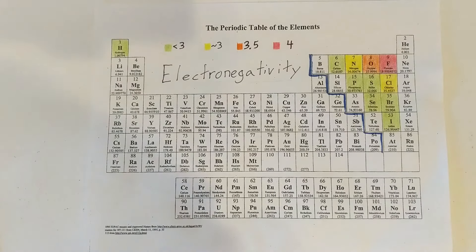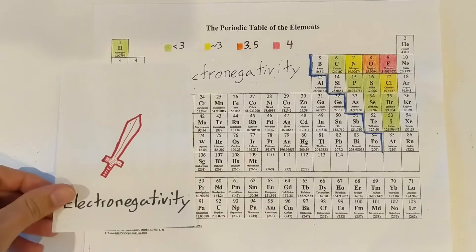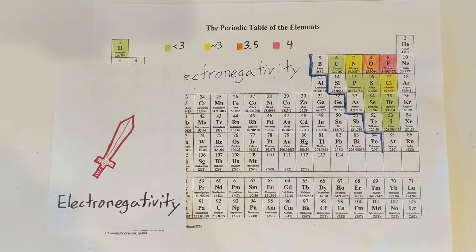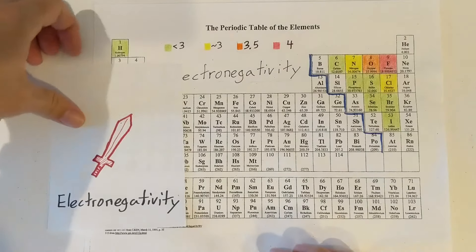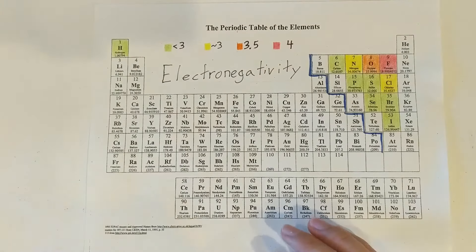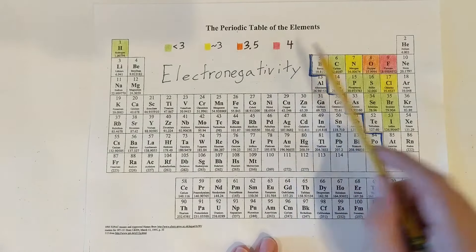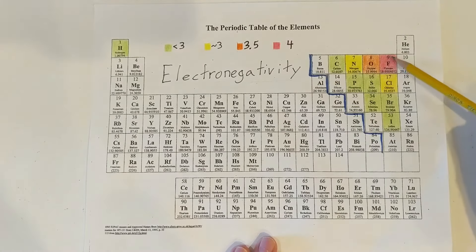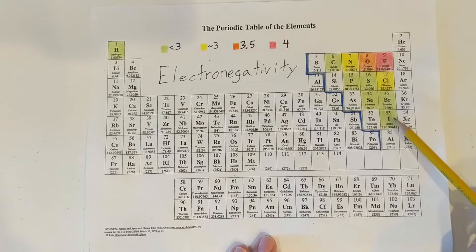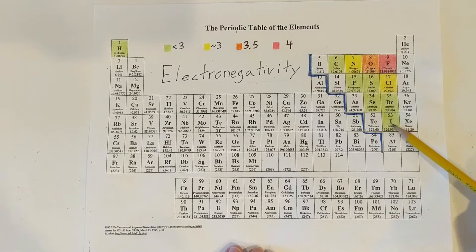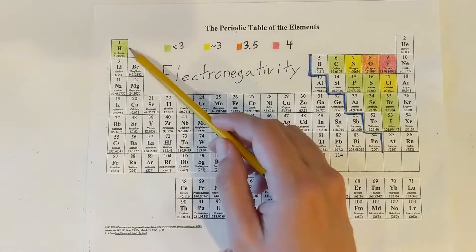Electronegativity is how badly an element wants to attract electrons — how badly it wants to steal electrons from another element. The higher the electronegativity, the higher I colored them red. Fluorine has our highest electronegativity, followed by oxygen, and nitrogen and chlorine are both right around three. Our other nonmetals that are below three are colored green.